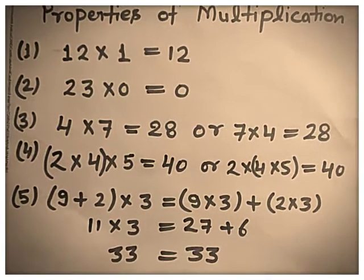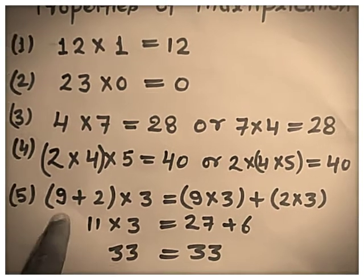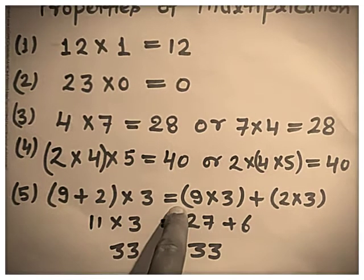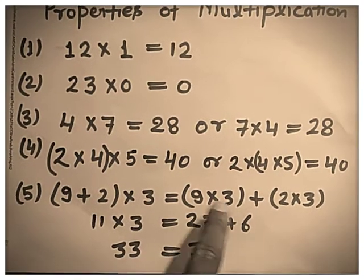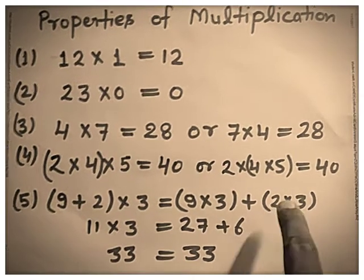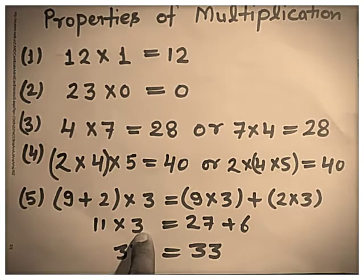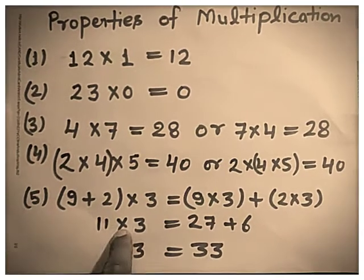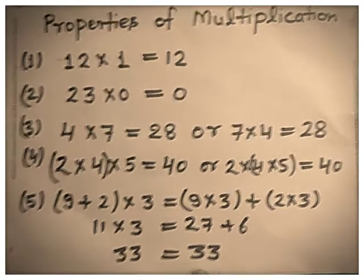Now, the fifth property: distributive property of multiplication over addition. For example, (9 plus 2) multiplied by 3. We distribute 3 into 9 and 2: 9 multiplied by 3, plus 2 multiplied by 3. On the left hand side, 9 plus 2 is 11, and 11 multiplied by 3 is 33. On the right hand side, 9 threes are 27, and 2 threes are 6, so 27 plus 6 is 33. Left hand side equals right hand side.